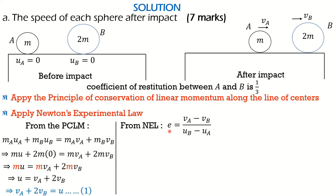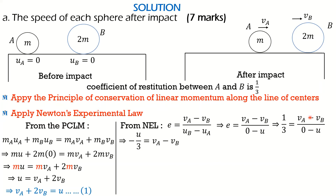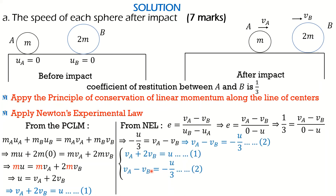From Newton's experimental law, the coefficient of restitution E equals the ratio of the speed of separation to the speed of approach. Substituting the required values, and remembering the coefficient of restitution E was given as one third, we equate one third to this expression and obtain our second equation. We now have two equations to solve simultaneously to find the speed of each sphere after impact.